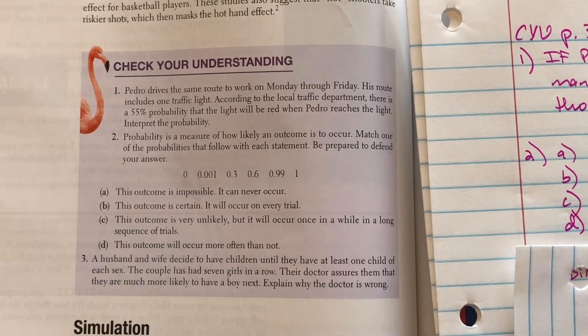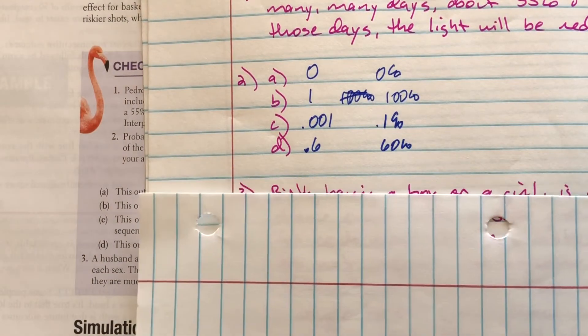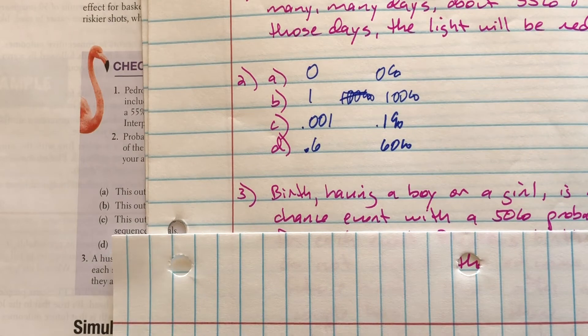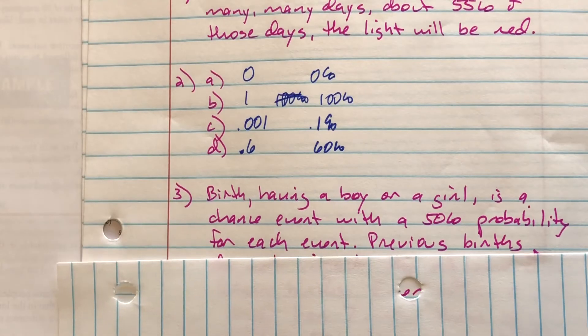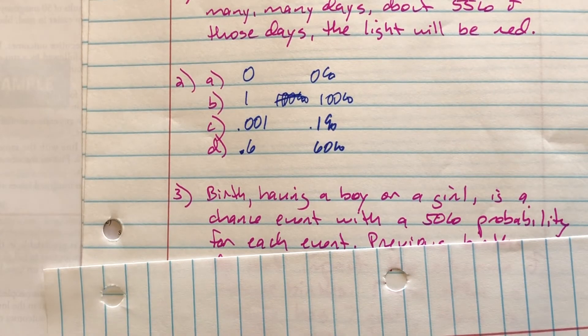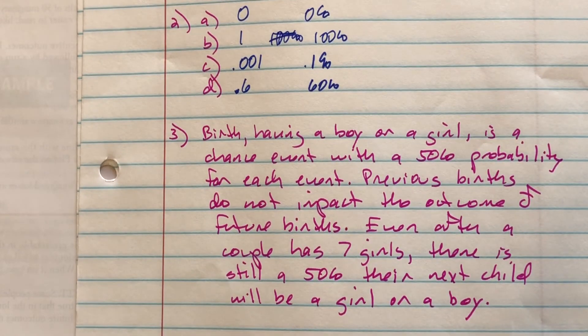Because when you're about to have a baby, you have a 50-50 chance of having a boy or a girl. There's only two outcomes, right? So 50% chance you're going to have a girl, 50% chance you're going to have a boy. Now, every birth that a family has doesn't depend on previous births. So every single time somebody's pregnant with a child, there's a 50% chance you're going to have a boy and 50% chance you're going to have a girl. So previous births do not impact the outcome of future births. So even though this couple had seven girls, there's still a 50% chance their next child is going to be a girl or a boy. Nothing you can do about that.